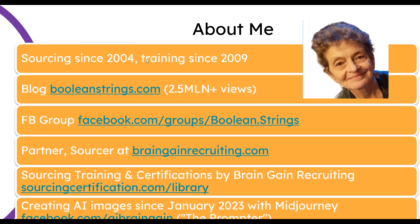A few things about me. I've been sourcing and training for a while. My blog, BullionStreams, is popular. The group that's more active than on LinkedIn is now on Facebook. I'm a partner and sourcer at BrainGain Recruiting, and our main business these days is training. You can find our courses at the library and some live courses. I am also into drawing AI images and it's become a pleasant, big part of my life. You can check my images here.